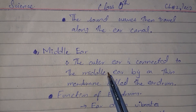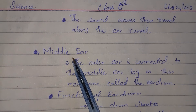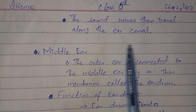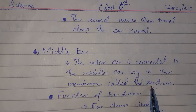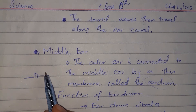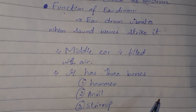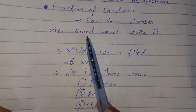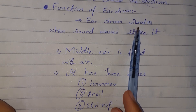The outer ear is connected to the middle ear by a thin membrane called the eardrum. If we have the outer ear, then the next portion is the middle ear. The function of the eardrum is that it vibrates when the sound waves strike it.